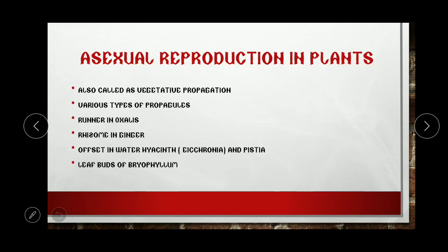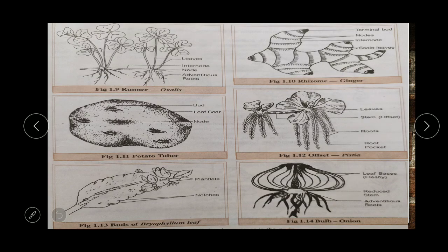Now, asexual reproduction in plants. Asexual reproduction in plants is also called vegetative reproduction, and the structures that give rise to new organisms are called vegetative propagules or simply propagules. The various propagules are: runner in Oxalis, rhizome in ginger, offset in water hyacinth and Pistia, leaf buds of Bryophyllum, tuber in potato, and bulb in onion.